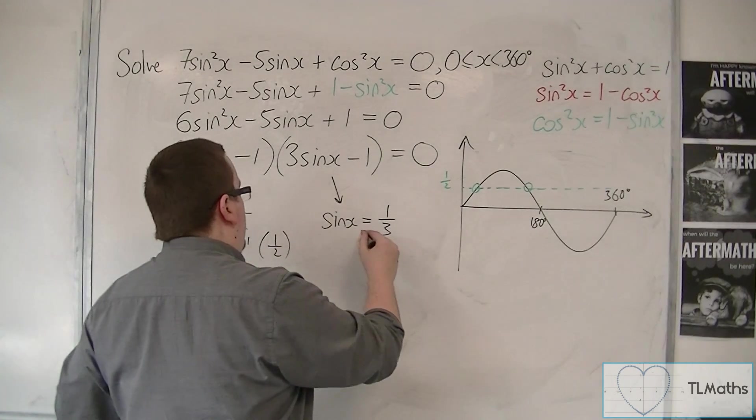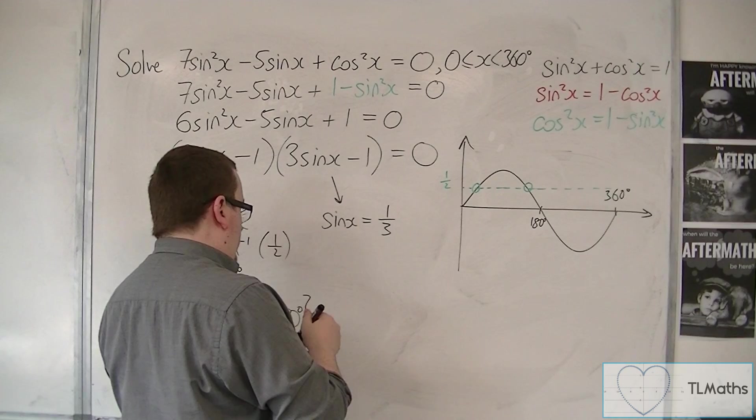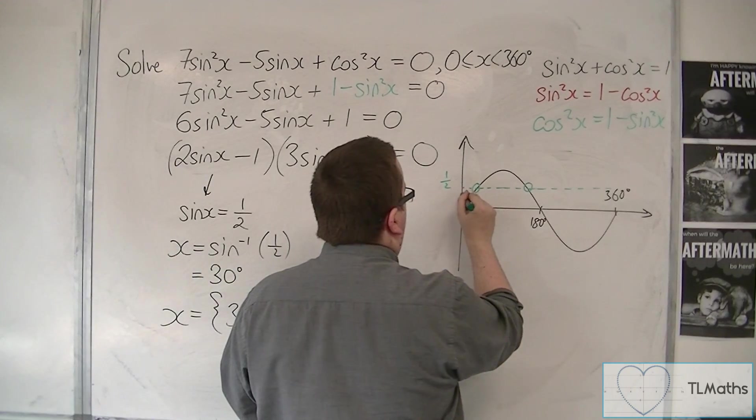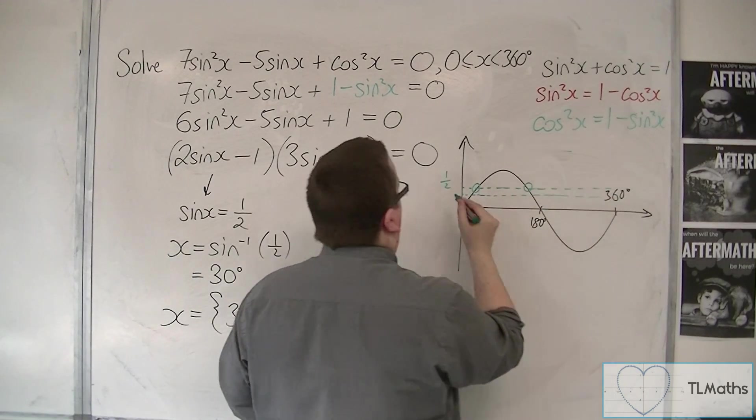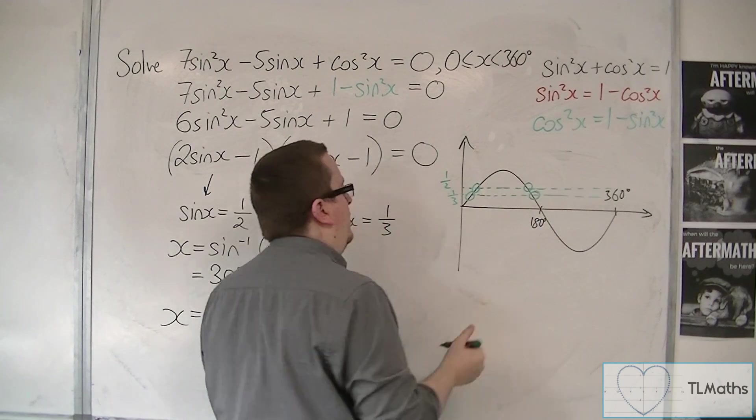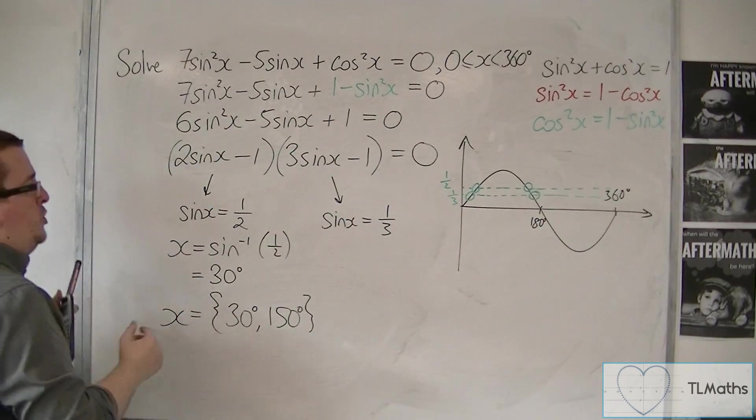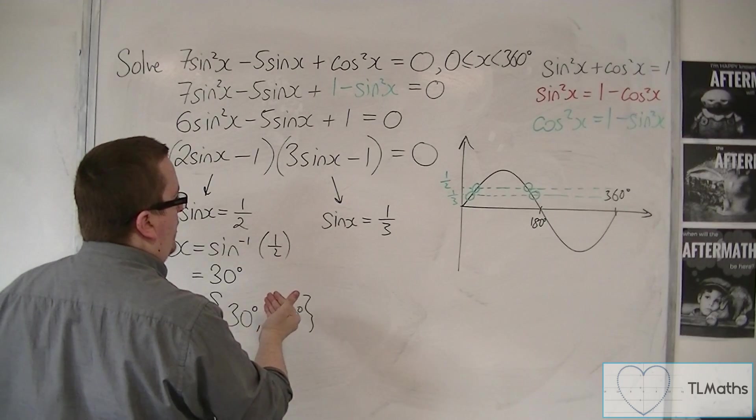For sine x = 1/3, one third is about there. We're getting two more solutions from this one - one less than 30 degrees and one more than 150.